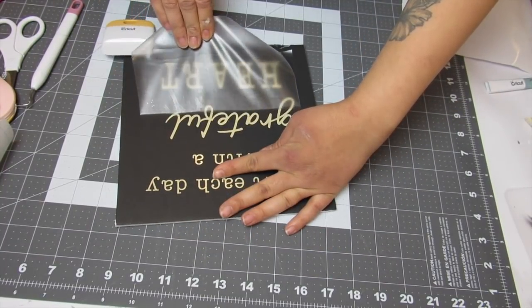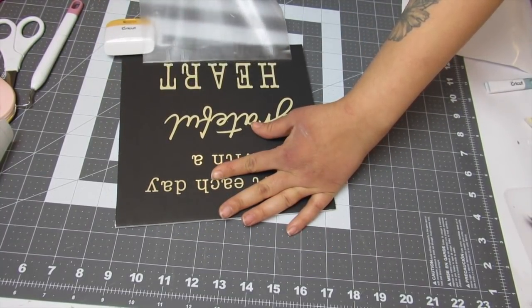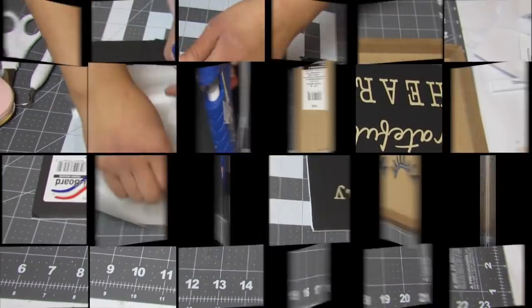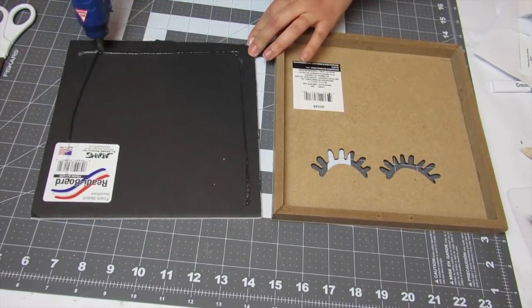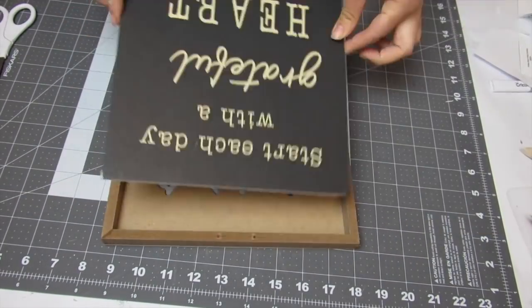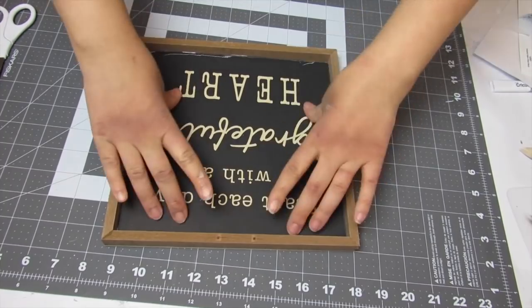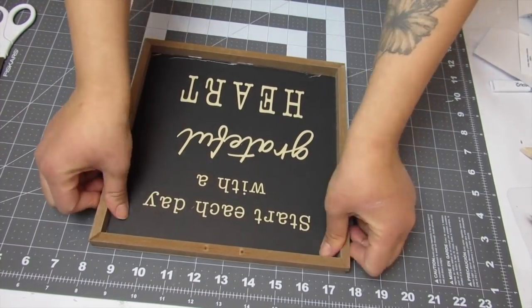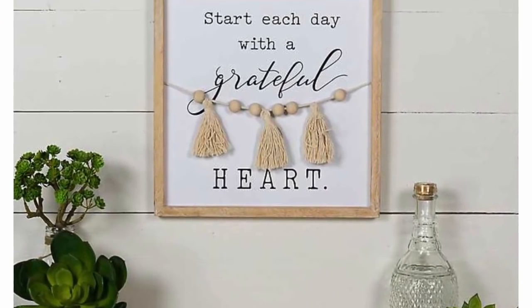As you can tell, the colors are not exact but this is all about using what you have. I really loved this piece, especially the saying that it has: start each day with a grateful heart. Something that I definitely try to live by. So I liked the quote, I used what I had, and I actually liked the color palette that I used. To secure that foam board in the sign I just used some hot glue.